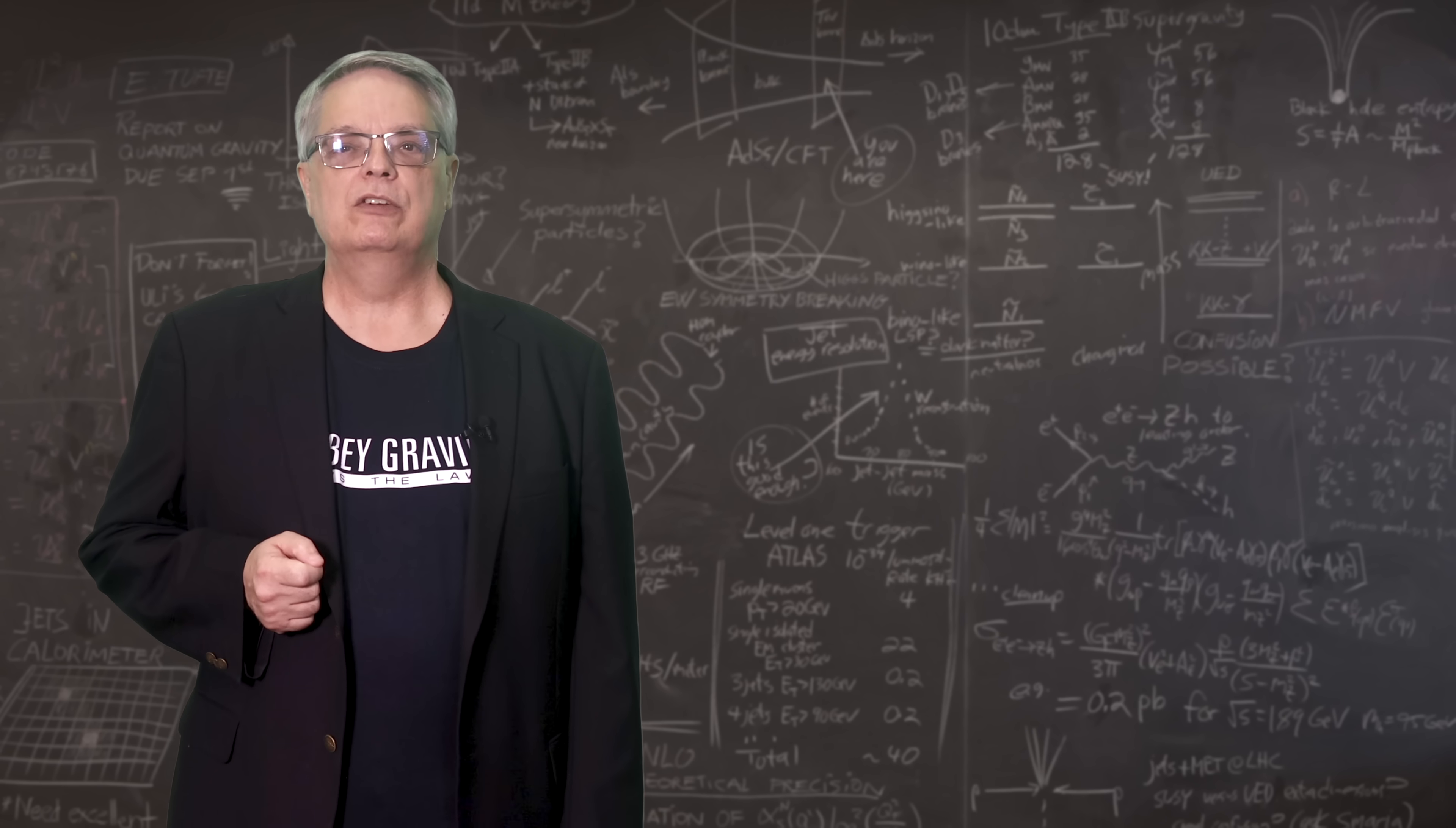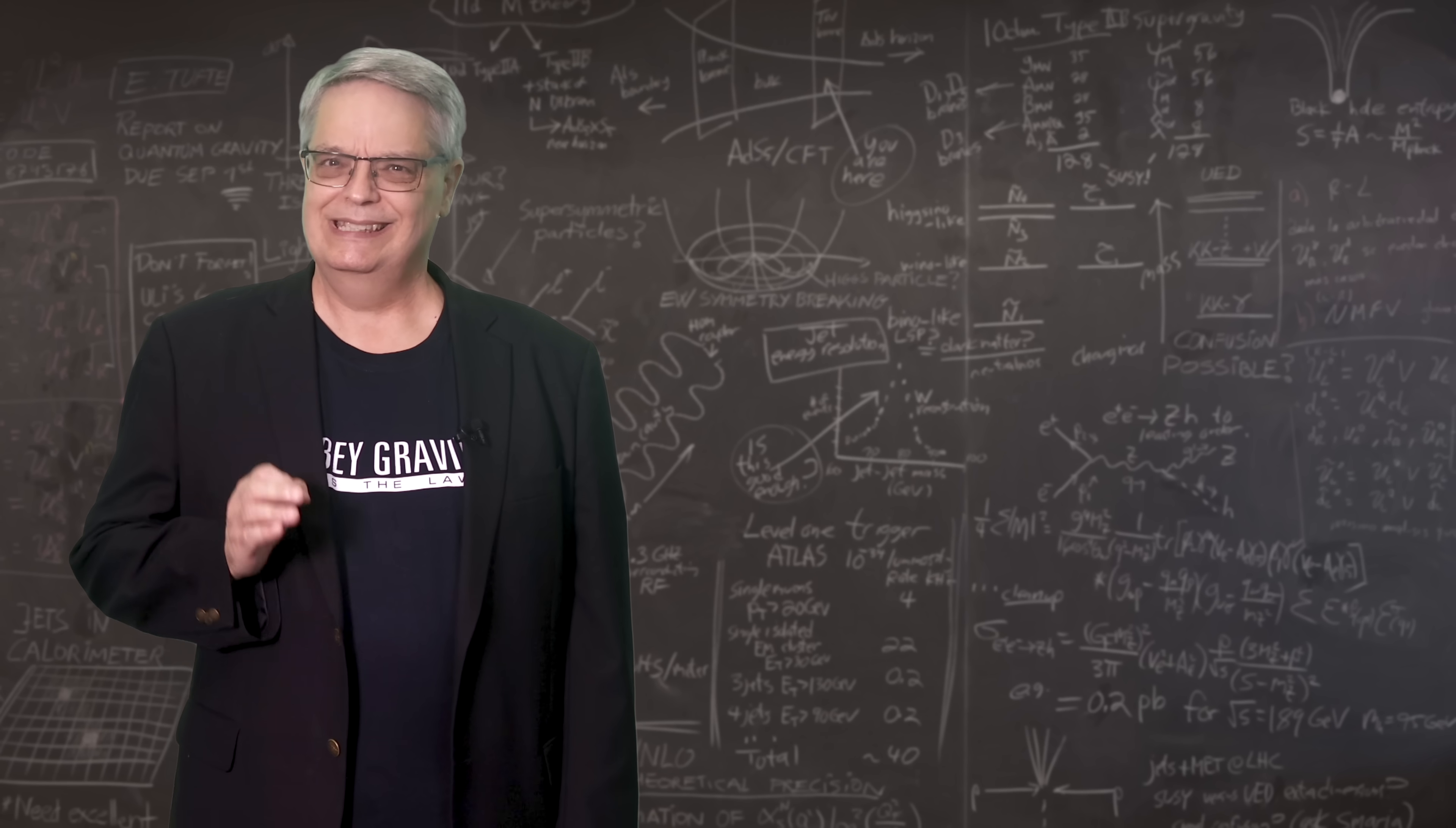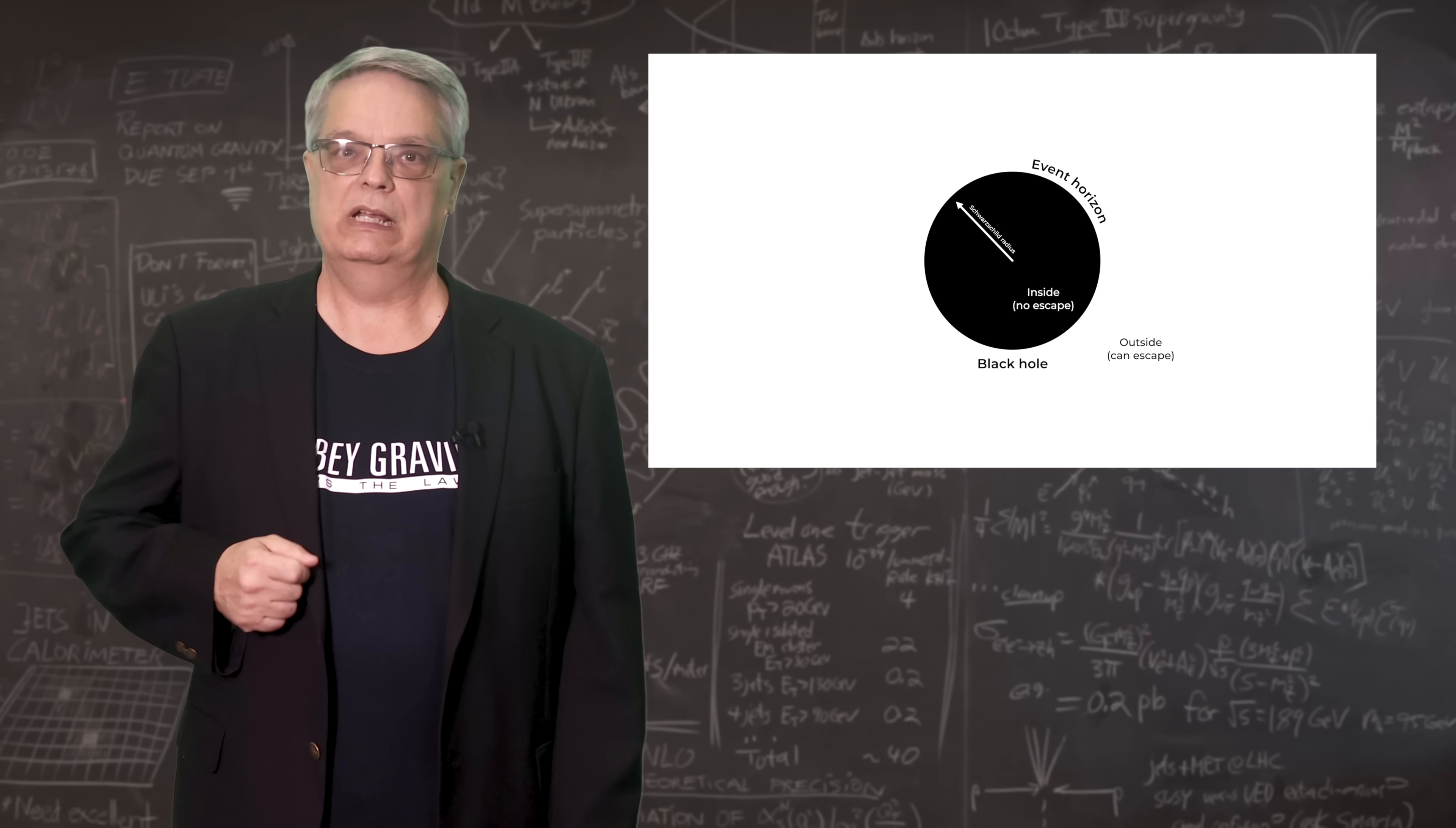As a quick reminder, a black hole is an object, often with the mass of a biggish star, but with the mass concentrated into tiny size. The gravity near the black hole is very strong and there is a distance from that small mass where gravity is so strong that not even light can escape. A sphere at that distance is called the event horizon.